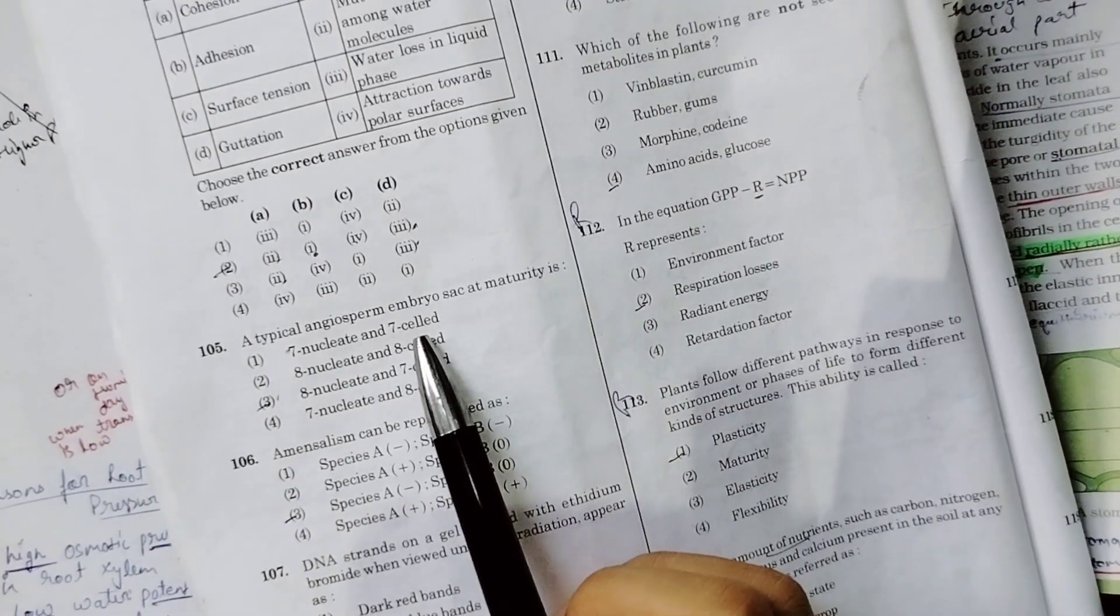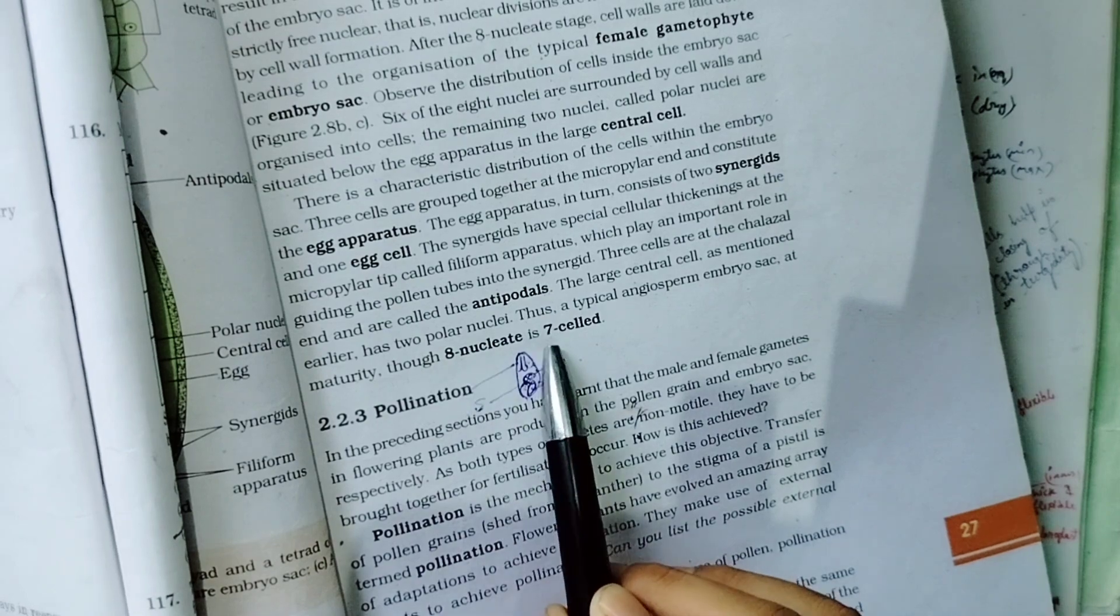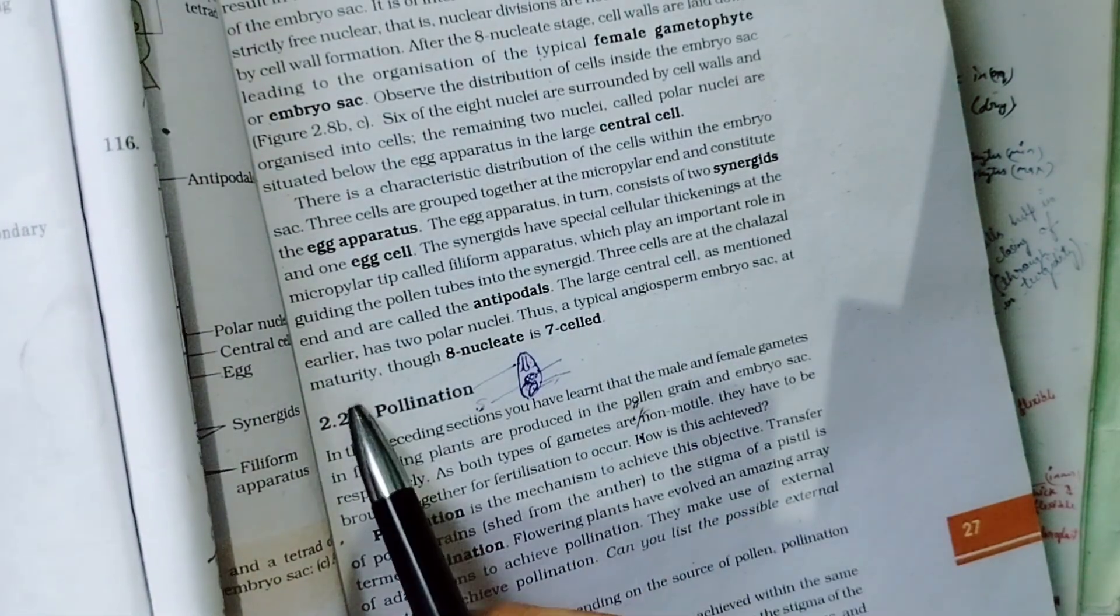A typical angiosperm embryo sac at maturity age: 8 nucleate, 7 cell. 8 nucleate at maturity.